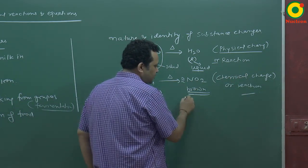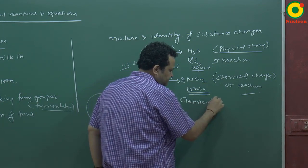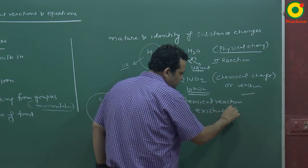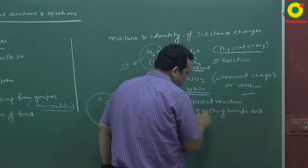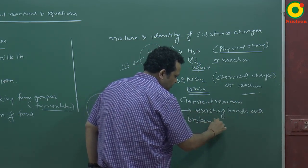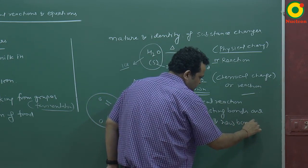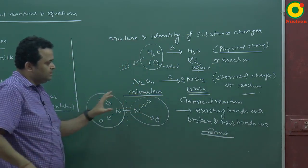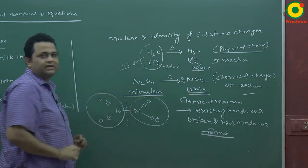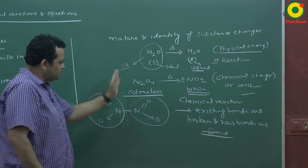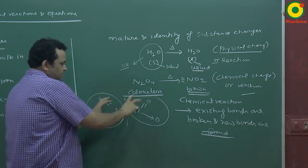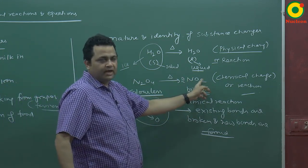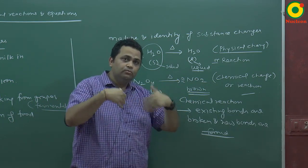What is a chemical reaction? During a chemical reaction, existing bonds are broken and new bonds are formed. This is what we call a chemical reaction. Because nitrogen and nitrogen were connected through a bond — a single bond — when we warm it, this bond is broken and the molecule separates into two NO2 molecules, which are brown. So if bonds are breaking or new bonds are formed, that comes into the category of a chemical reaction.